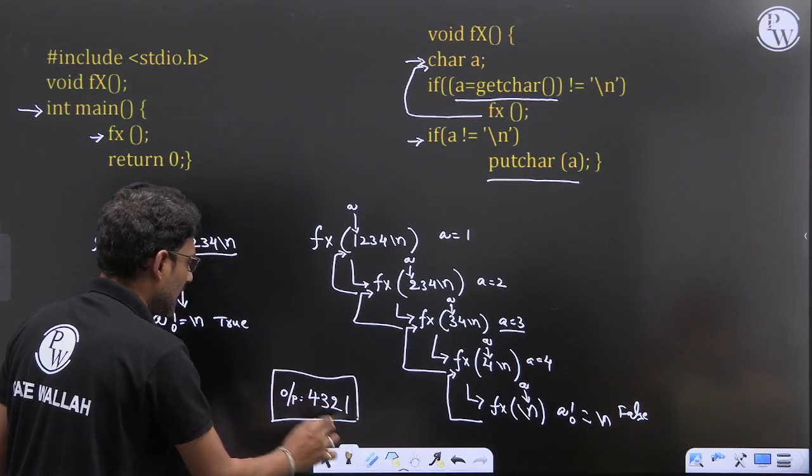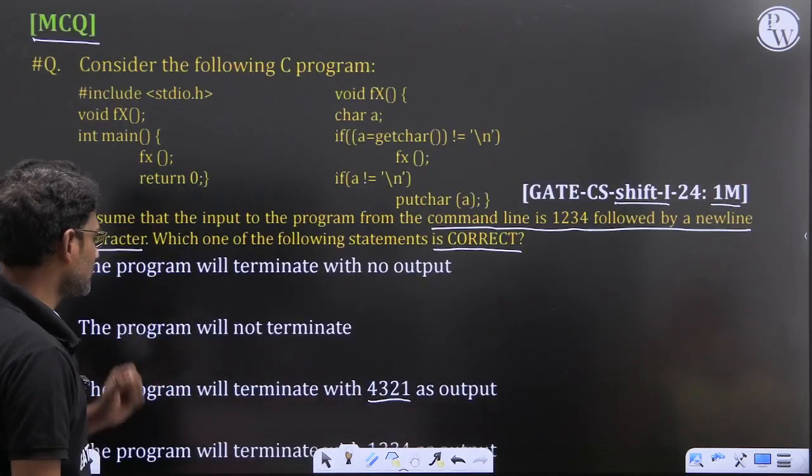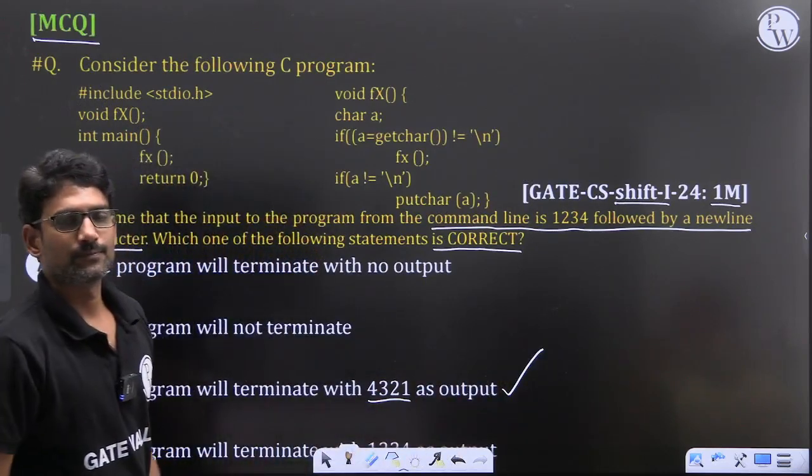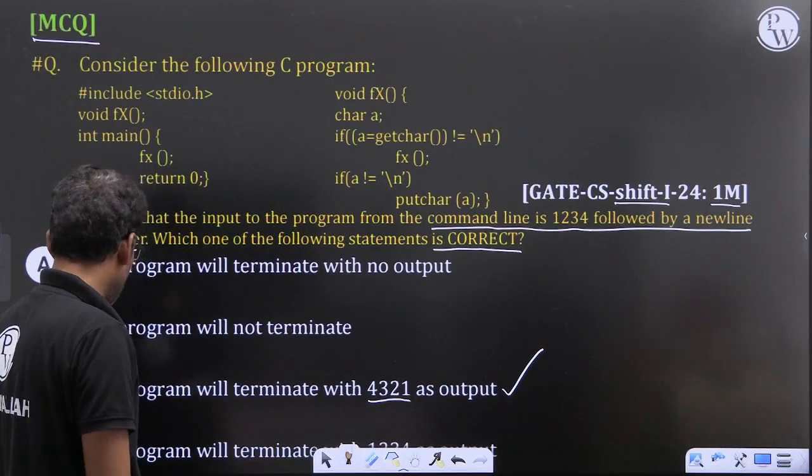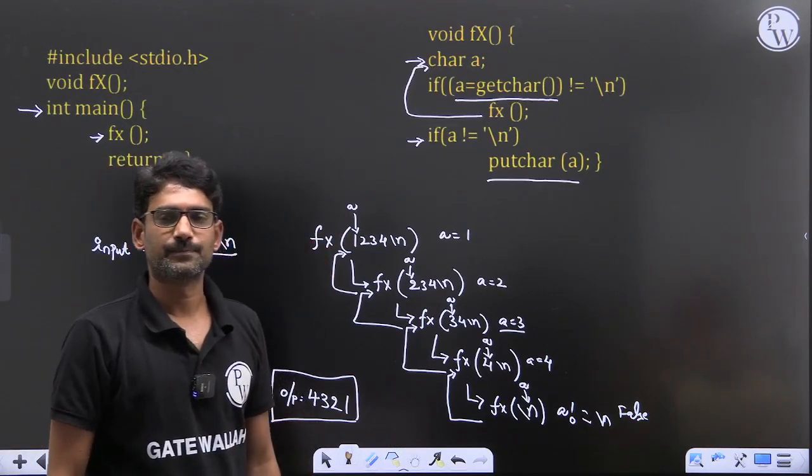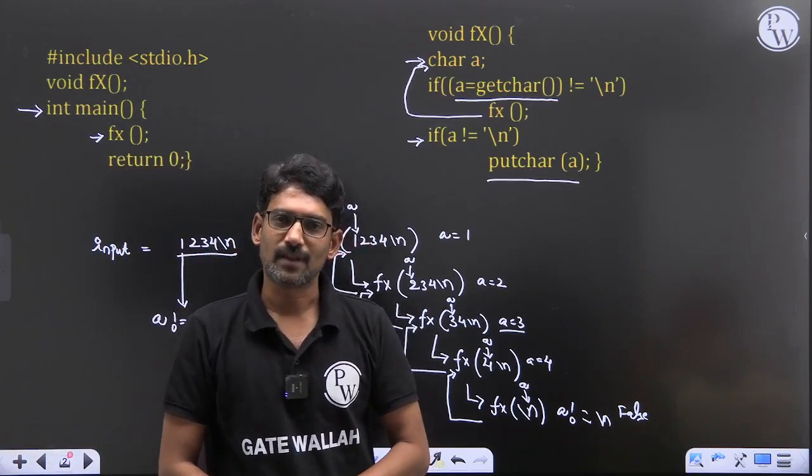So the program will terminate with 4321 as output. So the right answer for this question is option C. Option C will be the right answer, and this is how you have to trace it. Got it? Thank you.